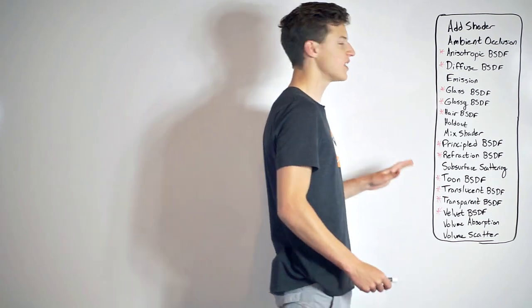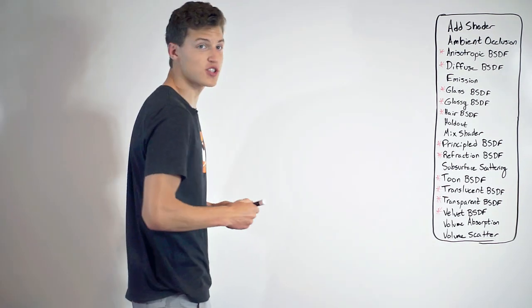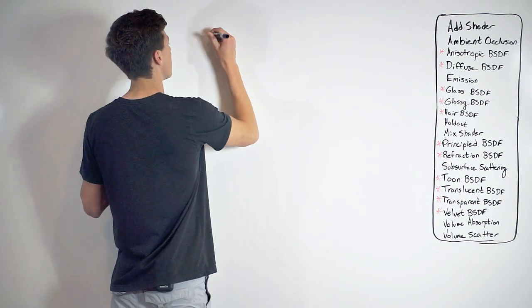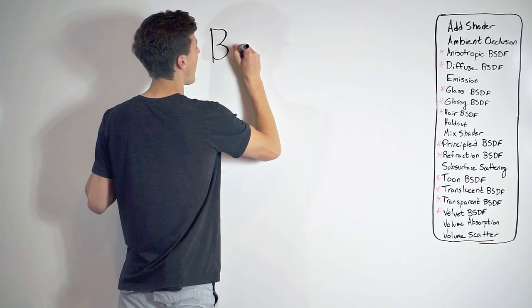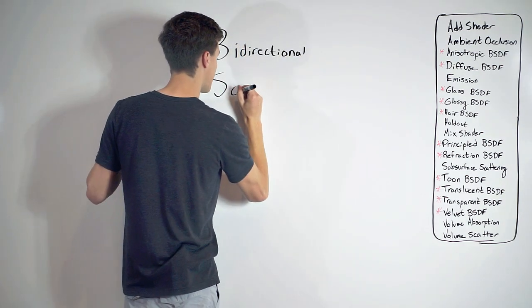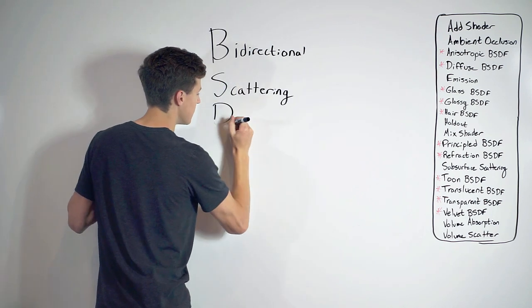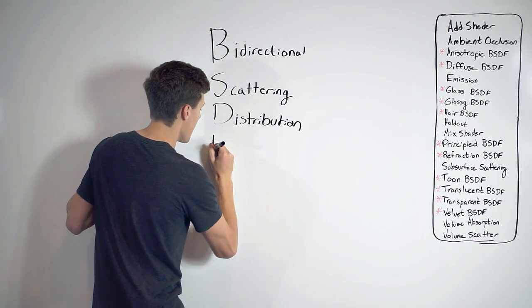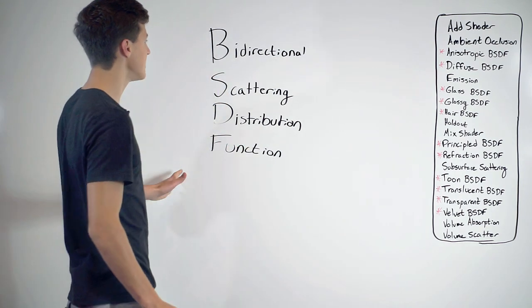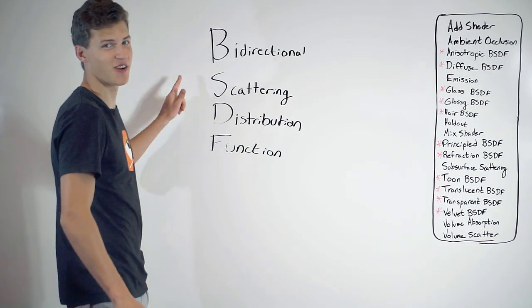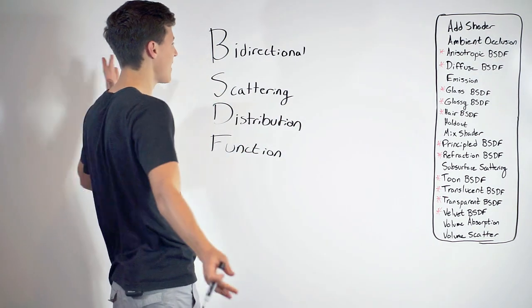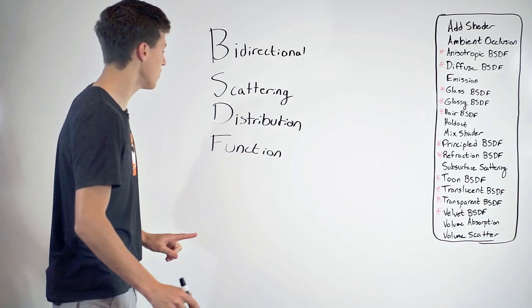So what exactly does BSDF stand for? Well, it's pretty much the world's most boring acrostic poem you'll ever see. Let's get started. B stands for bi-directional. S stands for scattering. D stands for distribution, and F stands for function. So a BSDF is a bi-directional scattering distribution function. Well, now that I answered your question you can leave. Just kidding. What in the world does that mean? Well, if we break the word down, we can figure out.